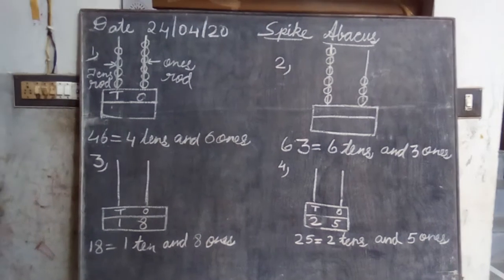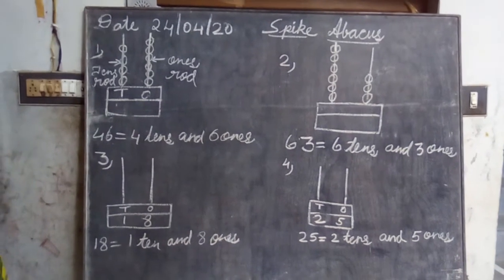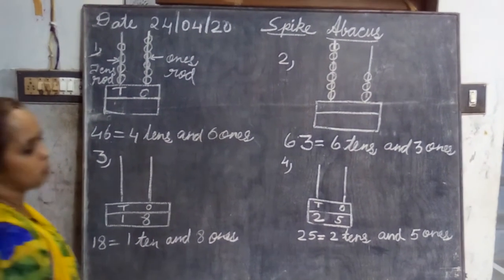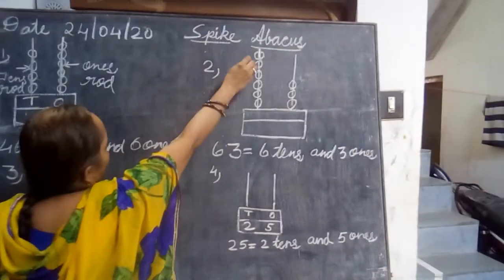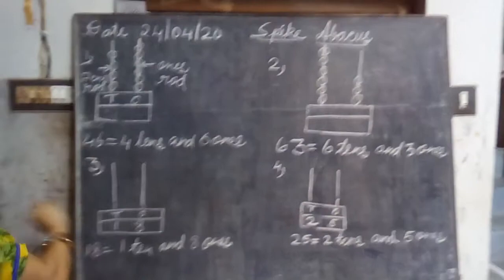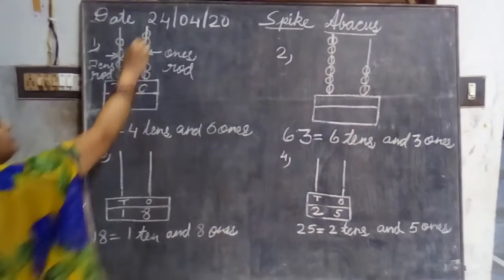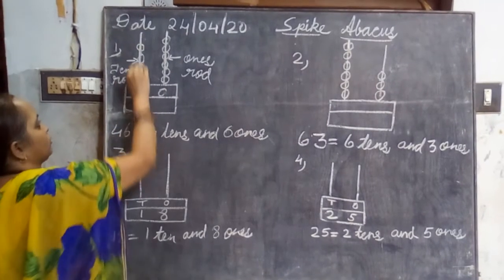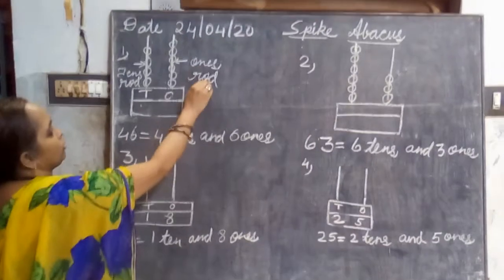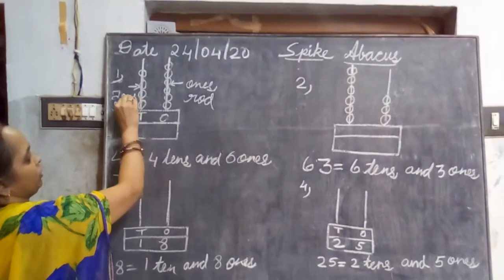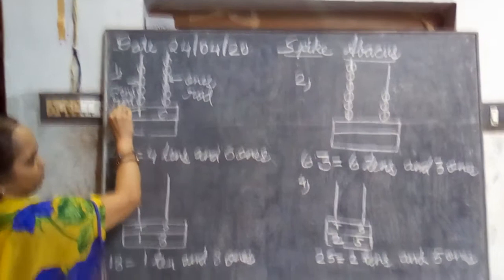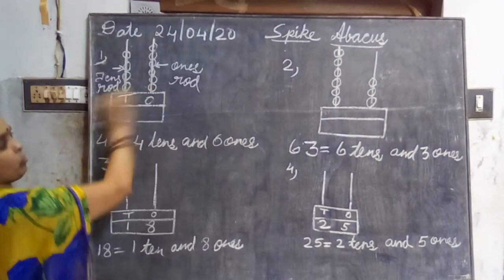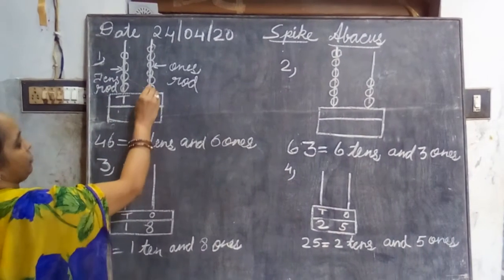Good morning dear students. Today we are in second class maths. We are going to study about spike abacus. In that, these rods are called ones rod and this is called tens rod. So in this we will count how many spikes are there in the abacus.